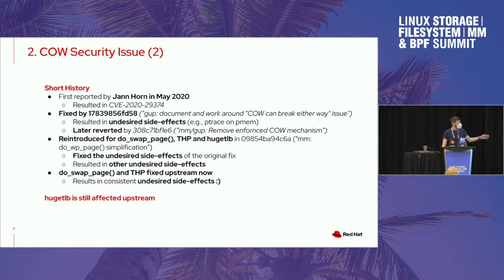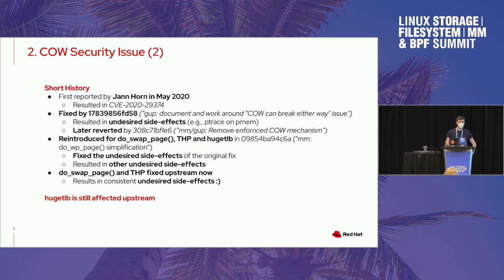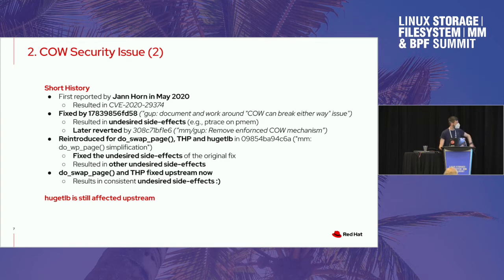Long story short, do_swap_page and transparent huge pages are now fixed upstream — just in the upcoming kernel release, they're going to be fixed such that there will not be a security issue. However, I call it that now most of the stuff is consistently broken. It's not that one thing is differently broken — everything is consistently broken — because we have these undecided side effects across almost all anonymous memory. Huge TLB is still affected upstream by the security issue and it's not easy to fix with the current approach, but the usage of huge TLB for sharing memory between a privileged parent and unprivileged child is rather rare, so that's something to take a look at in the future.